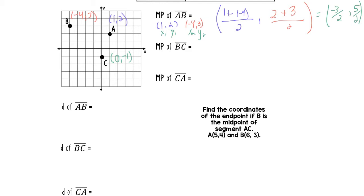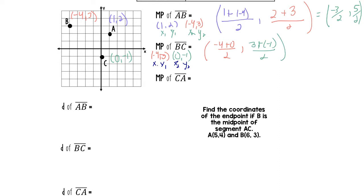Midpoint of BC: let's list our points again. B is (-4, 3) and C is (0, -1), and we call those X1, Y1, X2, Y2. So we've got X1 plus X2 over 2, and Y1 plus Y2 over 2. That gives us negative four plus zero, which is negative four over 2. Then three plus negative one is three minus one, so that's two over 2. Simplifying, we get (-2, 1) as our point in between B and C.